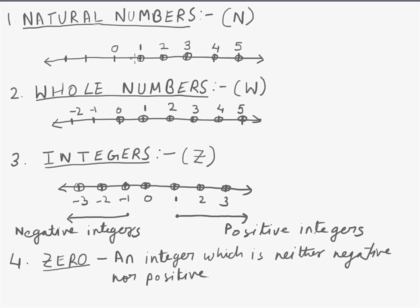So these points which represent 1, 2, 3, 4, 5 are the natural numbers. This is the representation of natural numbers on number line. Now if we include zero in this set, then the whole set becomes whole number. Whole number is denoted by W.